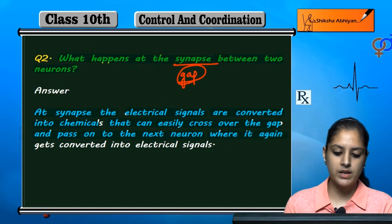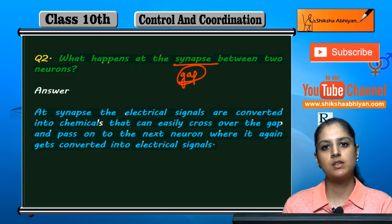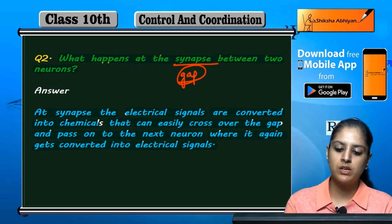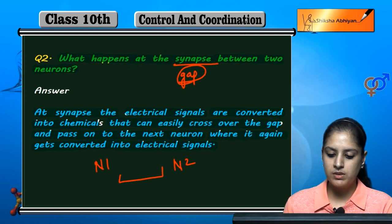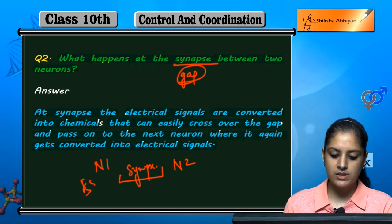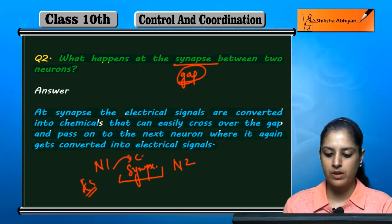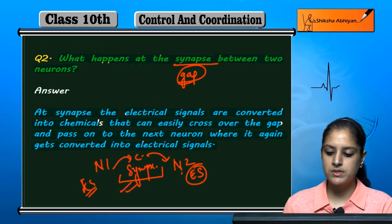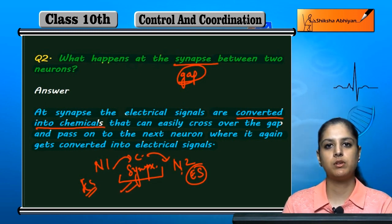Where it again gets converted into electrical signals. So there is neuron one and neuron two. This is the synapse. At the synapse, the conversion takes place—conversion into chemical signals.